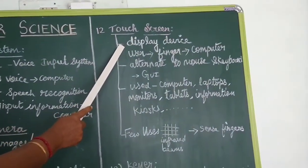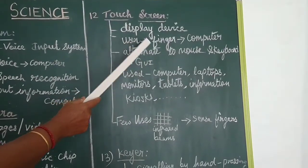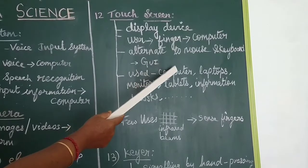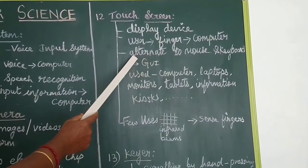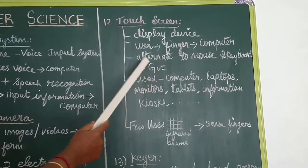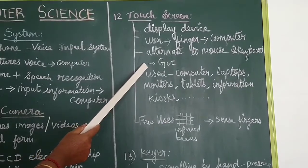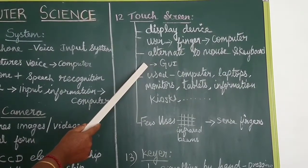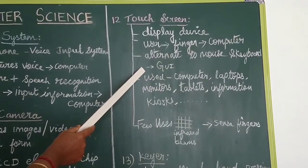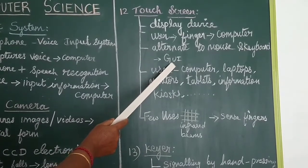That is the touch screen. Touch screen is a display device. Through this display device, the user can interact with the computer. The user uses their finger to touch the screen and interact with the computer, instead of using a mouse or keyboard. It is used for navigating a graphical user interface.